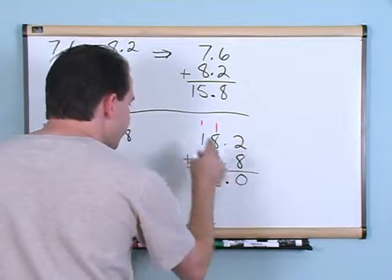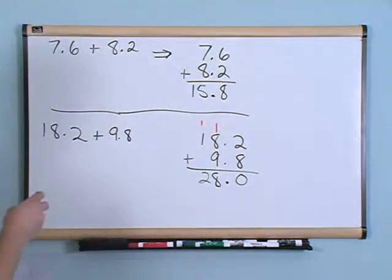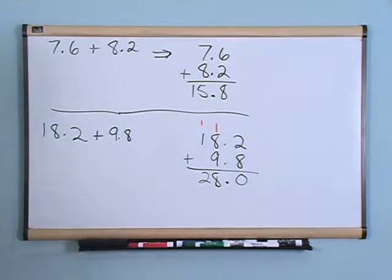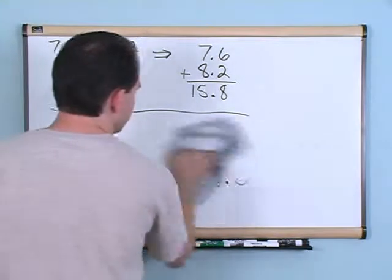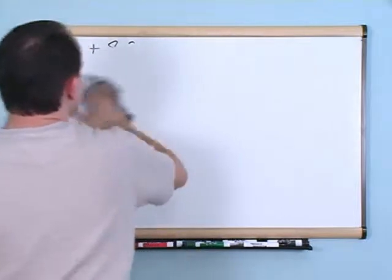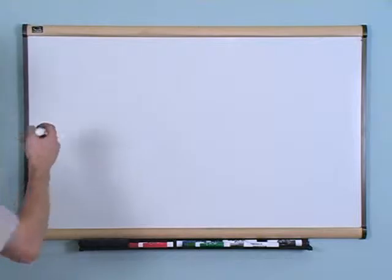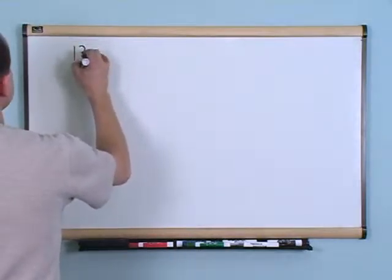Start in the right column, carry as needed. Here we had 1 plus 8 plus 9 give us 18, carried a 1, then write the final number down. When done, take the decimal and pop it down there — nothing different. So 28.0 is the answer.